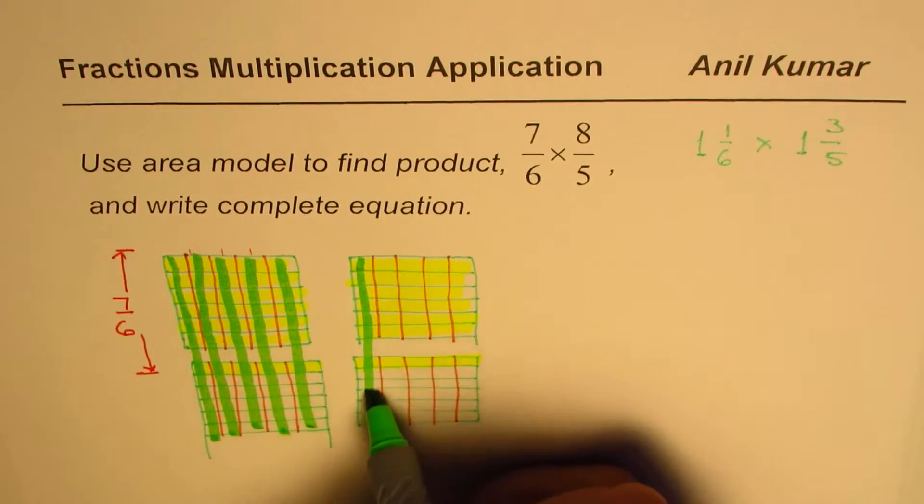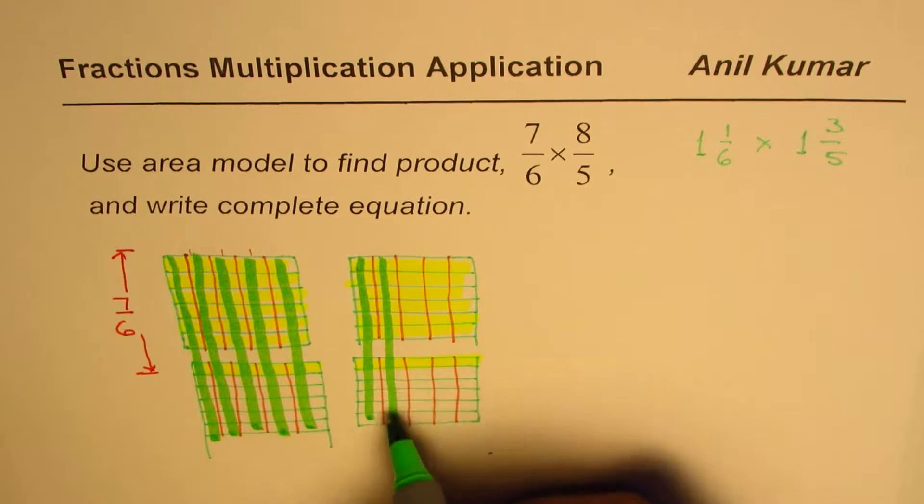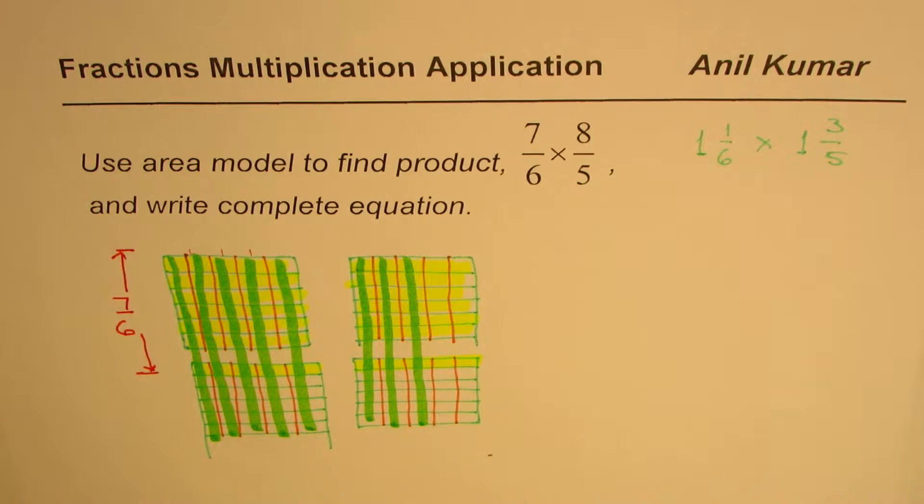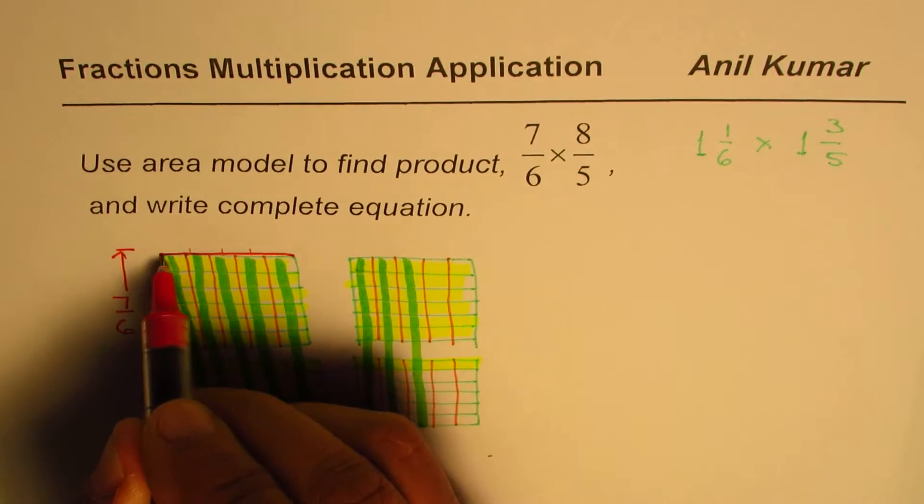This is 5. Now this one is 6th, right? 6th, 7th, and 8th. Right. So once you shade 8 out of 5, you get a common area. Identify the common area. So the common area is this whole. It's common. Is it okay?